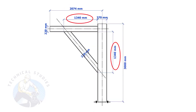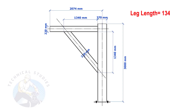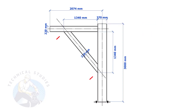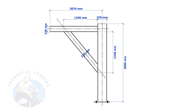Most of us know how to calculate the length and cutback if the leg lengths are equal. I will show you a simple calculation: multiply one leg length by 1.414. Remember, this method is applicable only if the leg lengths are equal. If both leg lengths are equal, the included angles will also be equal and 45 degrees.